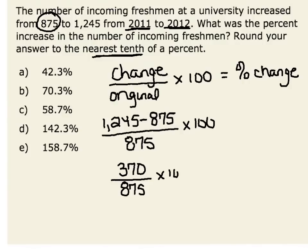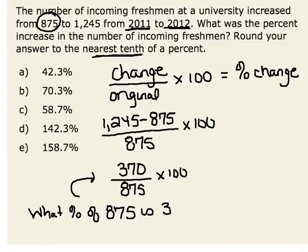And again, multiplying by 100 to give our percent change. What this is really asking us is: what percent of our original 875 incoming freshmen is 370? We would notice that half of 875 is 437.5. Therefore, we know that 370 is a little bit less than 50% of 875. This gives us a useful approximation.